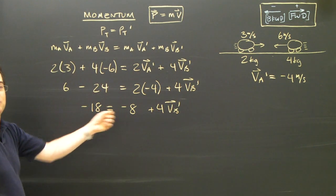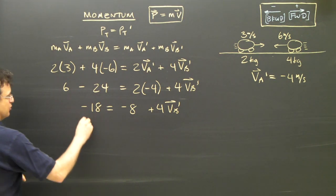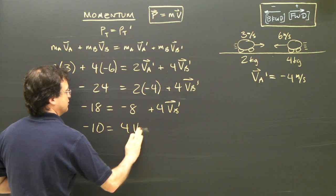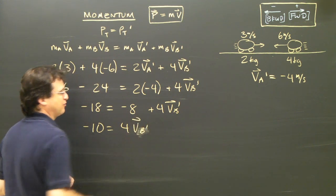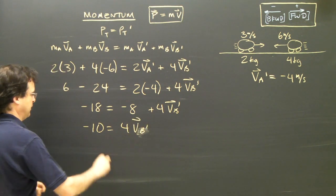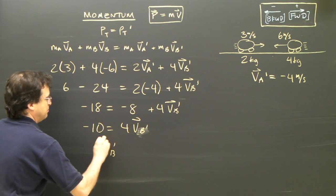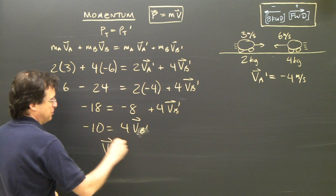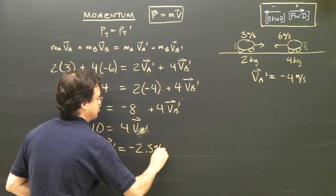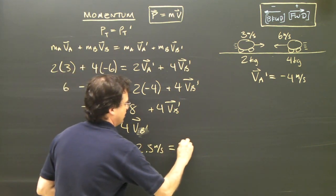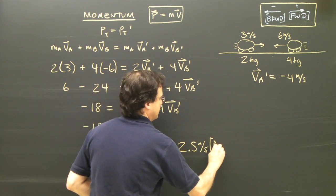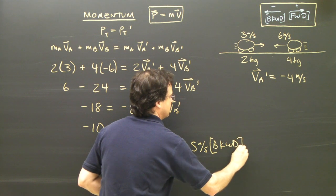This negative eight becomes positive eight when I add eight to both sides, and so this becomes negative ten, and that equals 4VB afterwards, the final velocity of B. So the final velocity of B ends up being ten divided by four, which is negative 2.5 meters per second, which we write as 2.5 meters per second. Again, negative means backward.